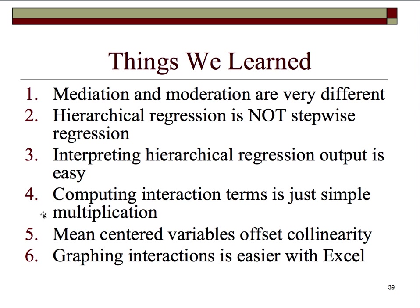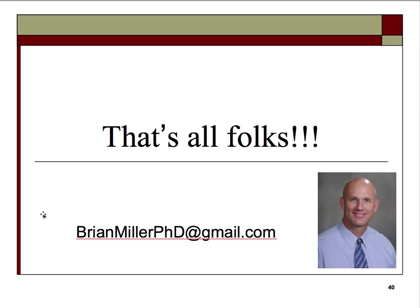We also learned how to interpret regression output, how to compute interaction terms through simple multiplication, and how to mean center variables to offset collinearity. I showed you the collinearity issues — the variance inflation factor was way out of line, as was the tolerance, both of which are output in SPSS. Then I showed you how to graph interactions using an Excel spreadsheet downloadable from Jeremy Dawson's website. If you have any questions, send me an email at brianmillerphd@gmail.com and I'll be happy to help. Thanks!